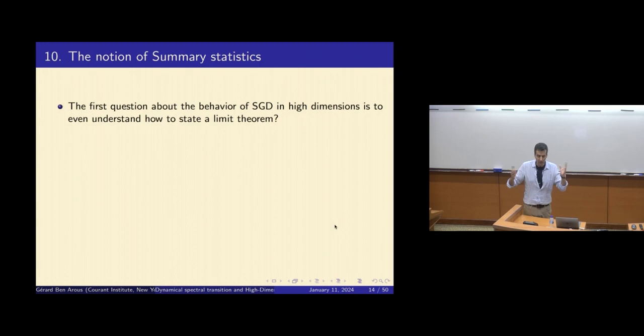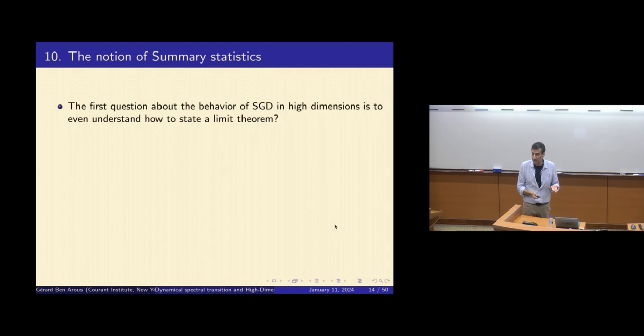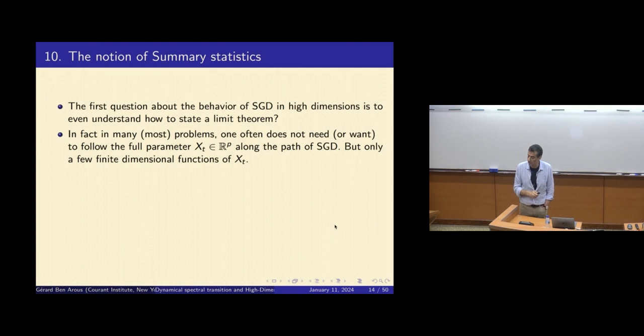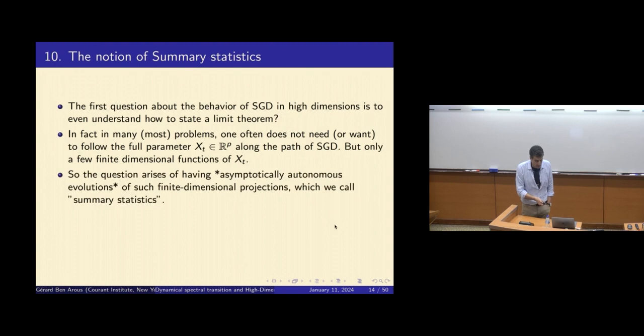If you do serious SGD, you might have your parameter space in dimension 10^9. You want to follow this flow, but of course, you don't really want to follow all 10^9 parameters. Typically, you want much less than that. That's the idea of summary statistics: in most problems, you don't need to follow the full parameter in R^P along the path of SGD, but only a few finite-dimensional projections — maybe a few parameters — because that's what will describe what you really want.